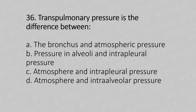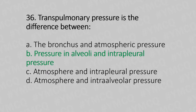Question 36: Transpulmonary pressure is the difference between — Option A: pleural and atmospheric pressure. Option B: pressure in the alveoli and intrapleural pressure. Option C: atmosphere and intrapleural pressure. Option D: atmosphere and intra-alveolar pressure. The answer is Option B: pressure in the alveoli and intrapleural pressure.